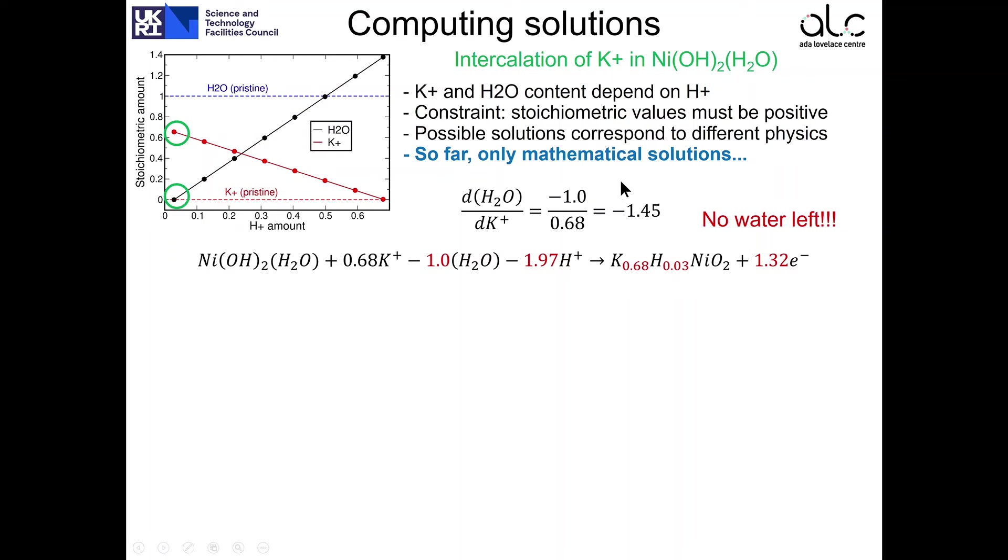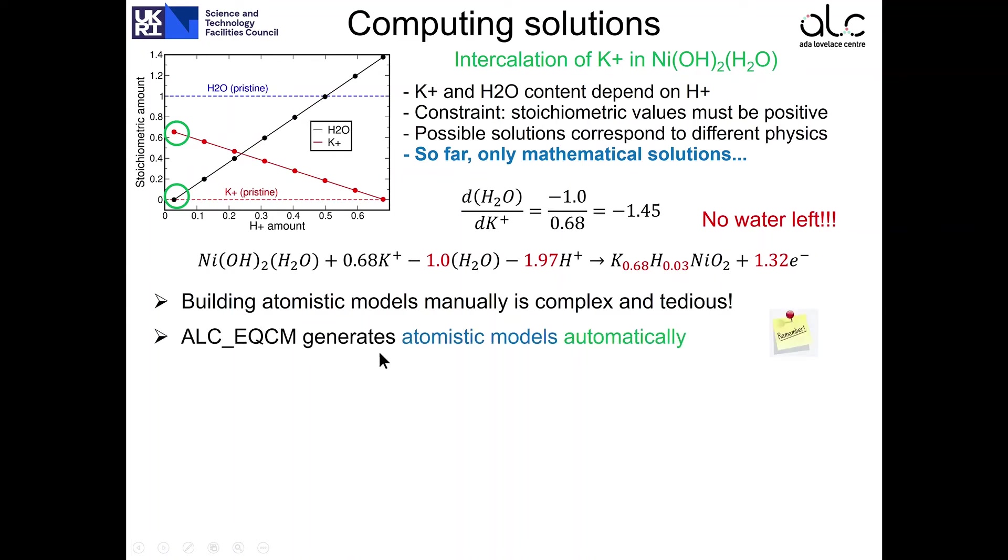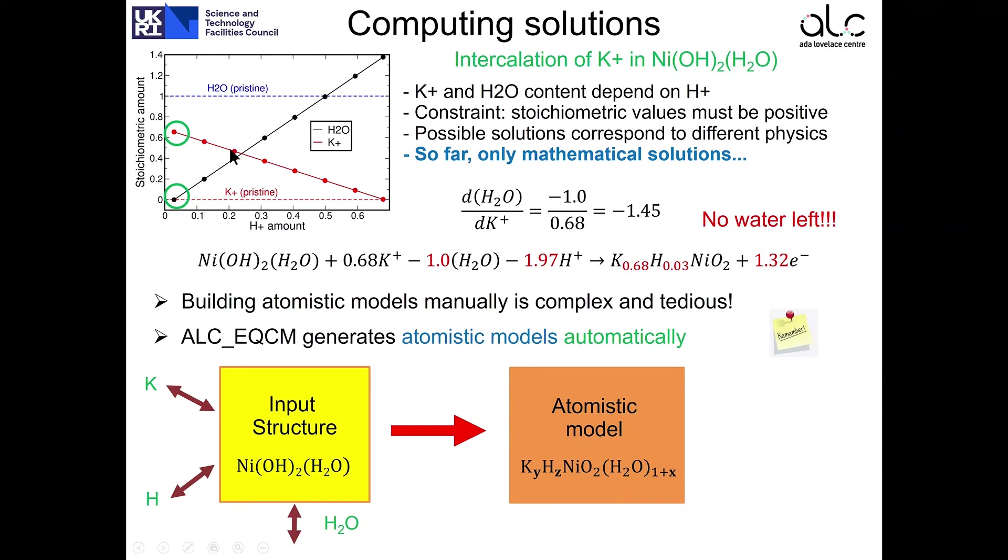When it comes to building atomistic models, we can do it manually, but this is complex and tedious, you don't want to do it. And for this reason, we have developed this software that generates atomistic models automatically for you. So you have to provide an input structure, in this case nickel-oxide-hydroxide-hydrated, and the algorithm will change the content of potassium, hydrogen, and water such that it will match the stoichiometry that you requested. In addition, you can generate files that will allow the simulation of the generated structures using different codes.